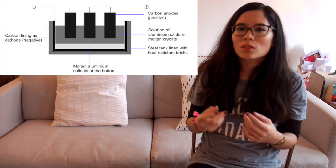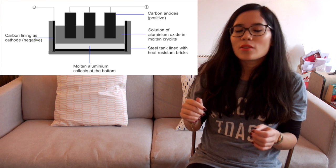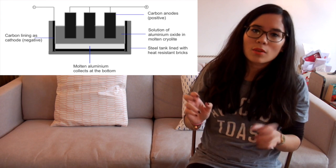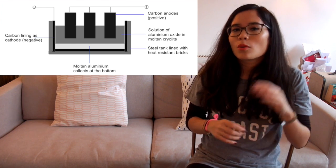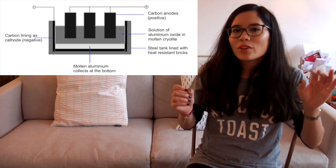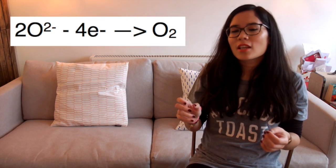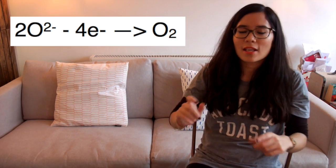You have your Al³⁺ ions floating around in what's called the electrolysis cell, together with the O²⁻ ions, and you obviously have your electrodes, because that's where the various elements will attach to. The positive electrode is the anode, and oxygen is going to discharge here because the oxygen ions are negatively charged, so they'll go to the positive electrode, and oxygen gas will be formed in the electrodes which hang down into the electrolysis cell.